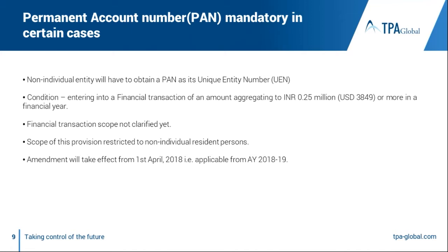The next slide talks about PAN being mandatory in certain cases. As per Budget 2018, a non-individual entity will have to obtain a PAN as its unique entity number, subject to the condition that it enters into a financial transaction of an amount aggregating to INR 2.25 million or more in a financial year. The scope of financial transaction has not been clarified yet by the tax authorities — it is still awaited. The scope of this provision is restricted to non-individual resident persons. The managing director or authorized signatory of the person filing the return is also mandatorily required to have a PAN in India. This amendment is applicable from assessment year 2018-19.